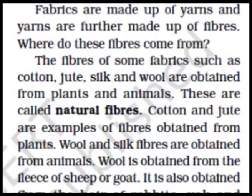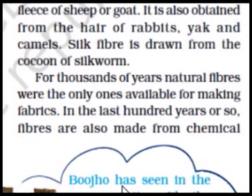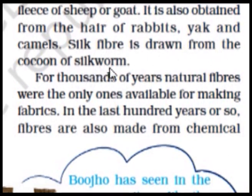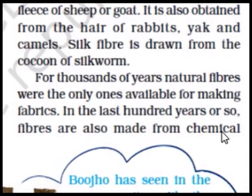Wool is obtained from the fleeces of sheep or goat. A sheep has very thick hair on its body, and from that we get wool fibers. It is also obtained from the hair of rabbits, yak, and camels. Silk fiber is drawn from the cocoon of a silkworm. For thousands of years, natural fibers were the only ones available for making fabric. In the last hundred years or so, fibers are also made from chemicals.